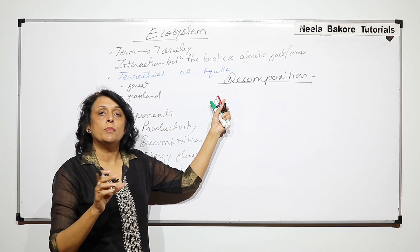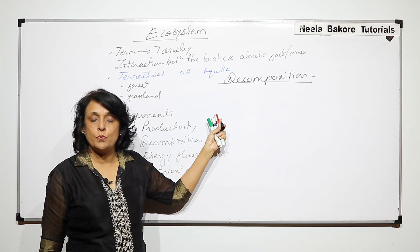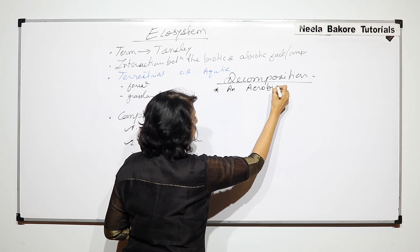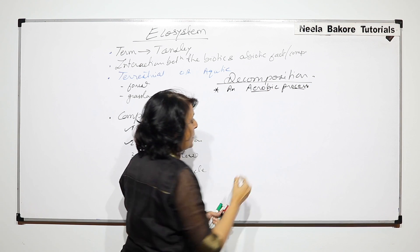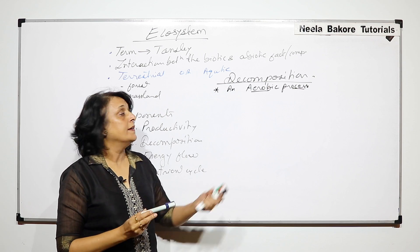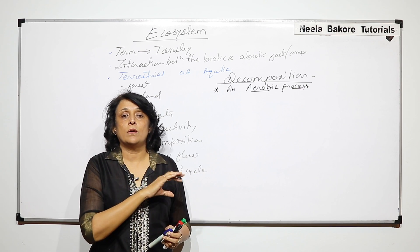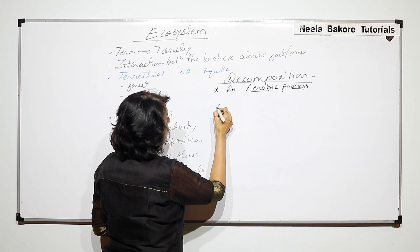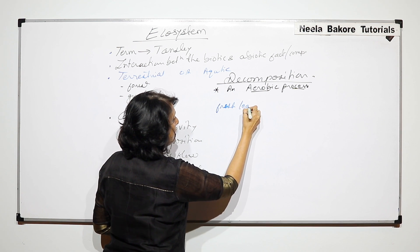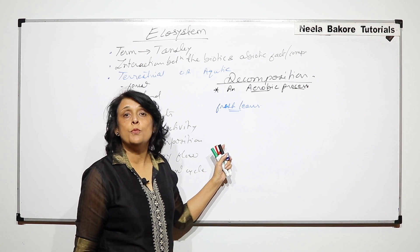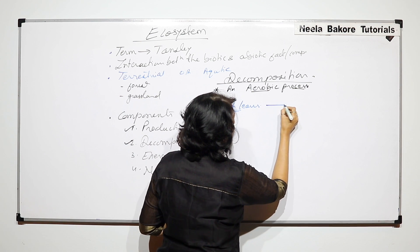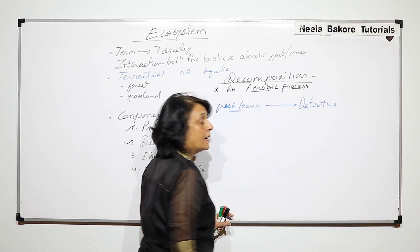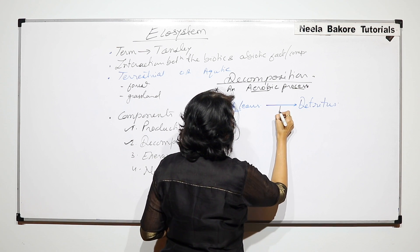When we use the word decomposition, there are many terms which are discussed whenever we talk of this process. Decomposition is an aerobic process — the breakdown of organic matter requires oxygen. The first stage involves fresh leaves which fall on the ground undergoing partial decomposition to form detritus. This process is known as fragmentation.